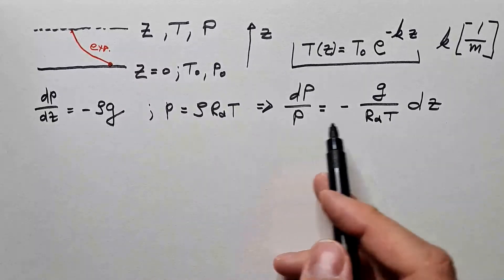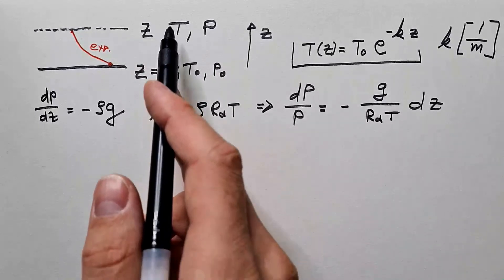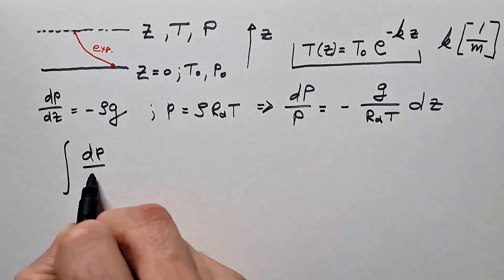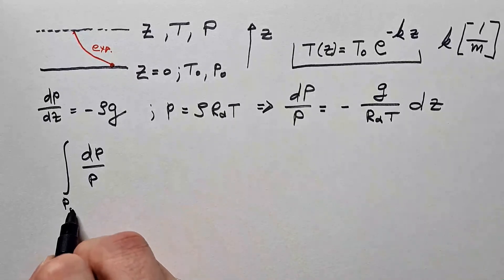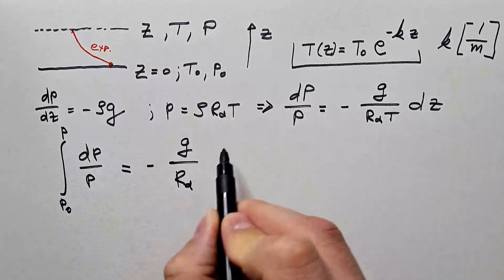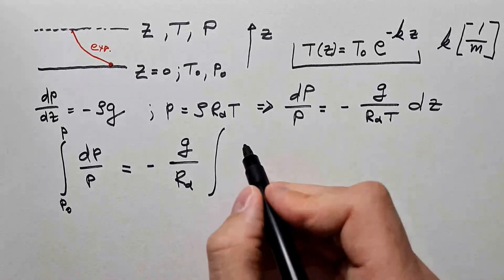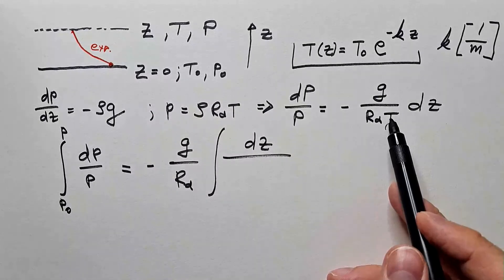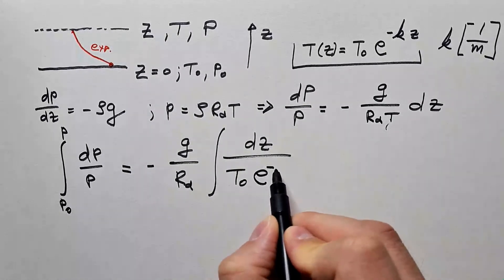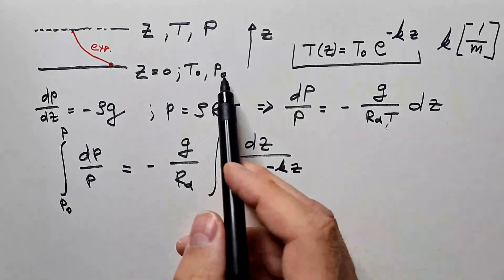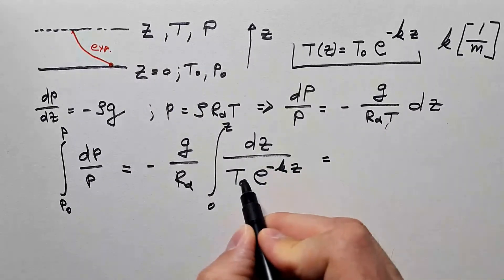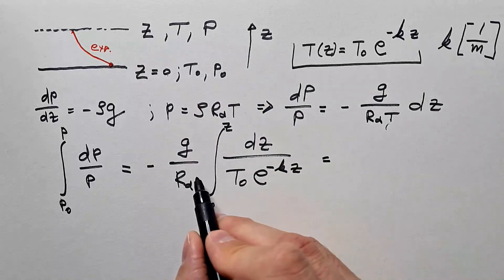Now, we have to integrate this differential equation using the limits that we see in this figure over here. So integral of dP over P, and pressure is going from P0 to pressure P, is equal minus g over Rd. These are constants, so I can put them in front of the integral. And the integral is dZ over T, because T is function of height, and it is the following function of height: T0 e to negative kZ. And the Z is going from 0 to some height Z above the surface.